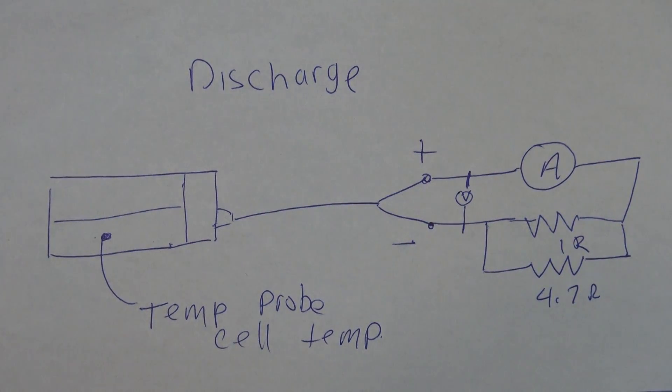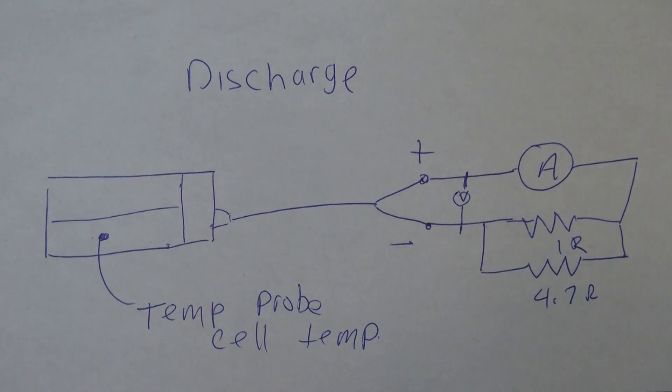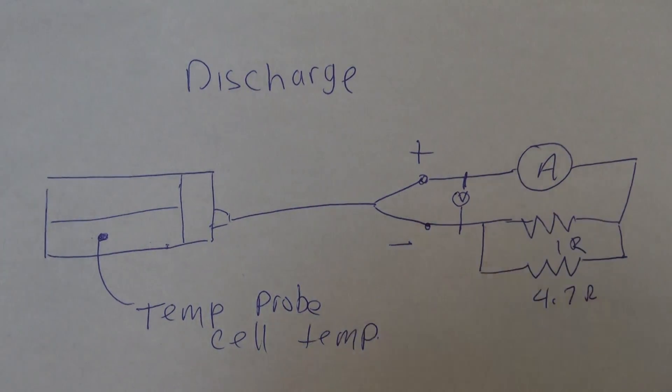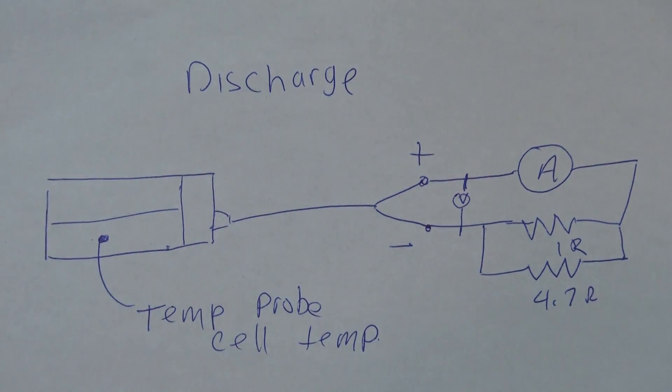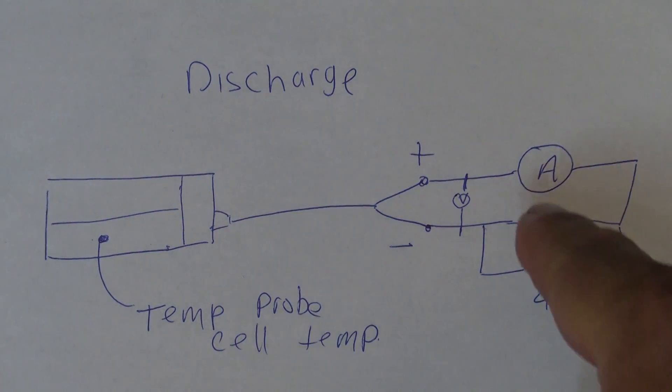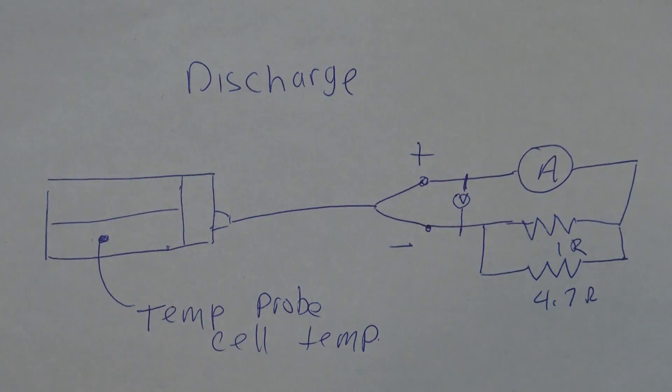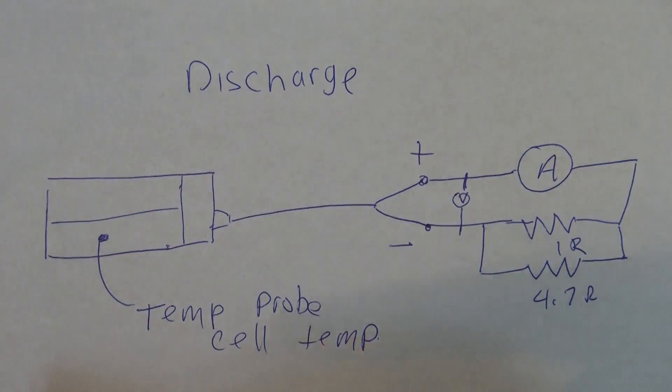Two resistors in parallel, a 1 ohm resistor and a 4.7 ohm resistor. When you factor in the losses in the jumper wires it's going to give us just under 2 amps, about 1.98, 1.97 amps of current. We can now monitor the current and voltage and with our temperature probe we can monitor the cell temperature or any of the other components in the buck converter.